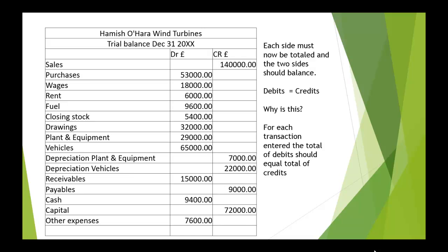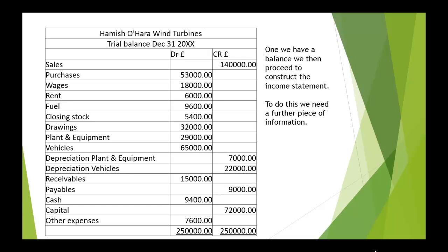We've now entered our balances from each of the accounts, so we have a trial balance. Each side now has to be totaled, and the two sides must balance — debits must equal credits. This is because for every transaction, the total of the debits should equal the total of credits. You can see that we've added them up and those two figures are the same, so we can now proceed to construct the income statement.